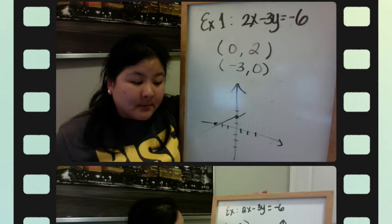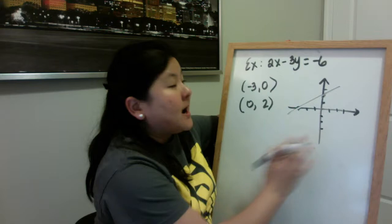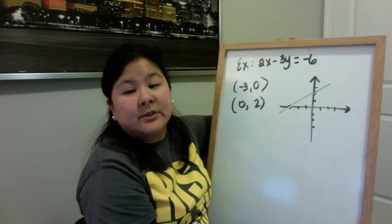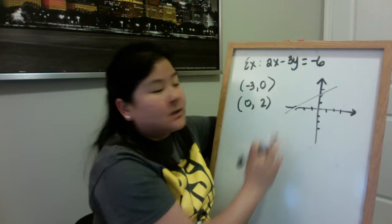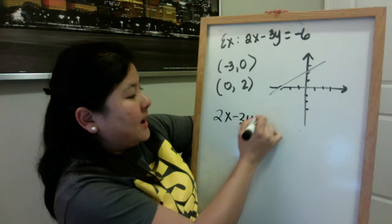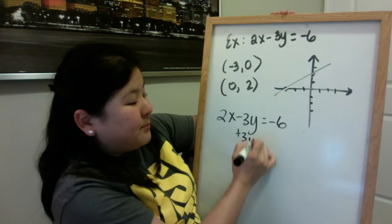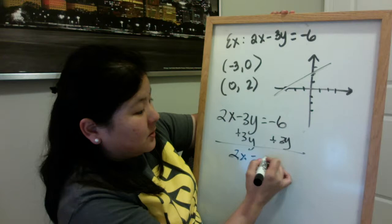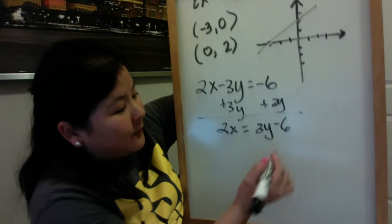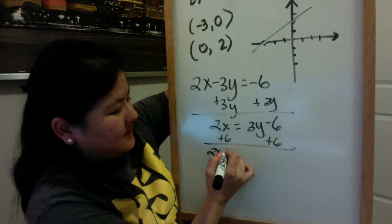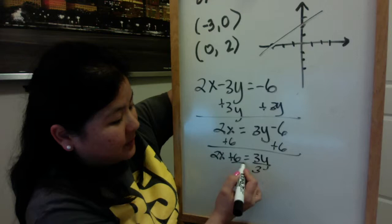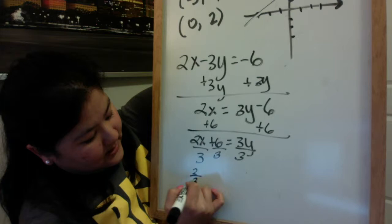Now that I have my intercept points, my graph and everything ready to go, the only thing left to do is to actually transform this into slope intercept form. There's a couple of things you can do. You can just take this equation and solve it for y. In which case you end up with 2x minus 3y equals negative 6. Move the 3y over. Why? Because I prefer to work with this as a positive. That leaves me with 2x equals 3y minus 6. Now the 6 needs to move over. That leaves me with 2x plus 6 equals 3y. Divide every term by 3. And my answer is 2 thirds x plus 2 equals y.